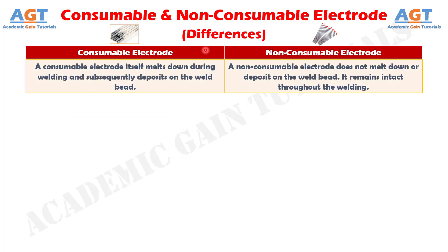Difference Number 1: A consumable electrode itself melts down during welding and subsequently deposits on the weld bead, whereas a non-consumable electrode does not melt down or deposit on the weld bead. It remains intact throughout the welding.